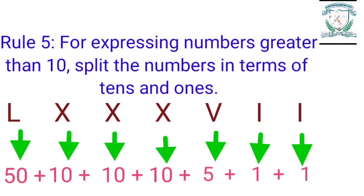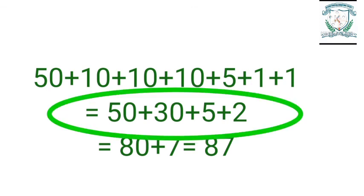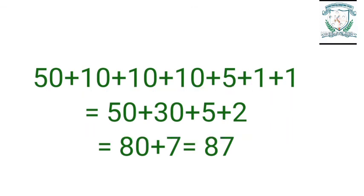Rule 5: For expressing numbers greater than 10, split the numbers in terms of tens and ones. Example: LXXXVII = 50 + 10 + 10 + 10 + 5 + 1 + 1 = 50 + 30 + 5 + 2 = 87.